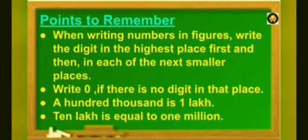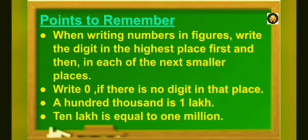Now, there are some points you should keep in mind. First, when writing numbers in figures, write the digit in the highest place first and then in each of the next smaller places. Write 0 if there is no digit in that place. A hundred thousand is 1 lakh. And 10 lakh is equal to 1 million. Thank you.